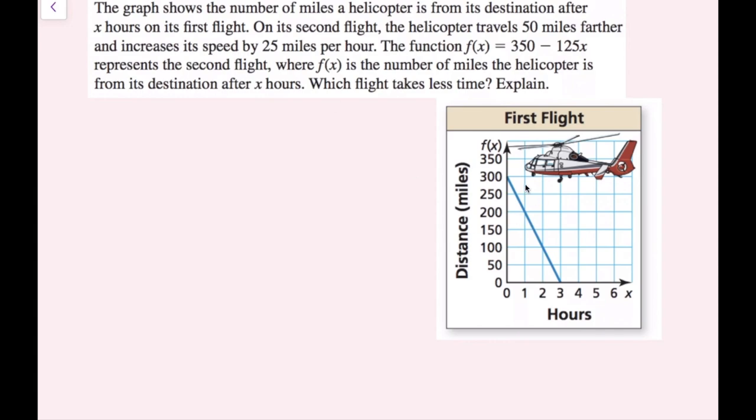So if we look at the graph down here, I can see that the first flight takes three hours because the distance away from their destination is zero when they reach three hours. So I'm going to write that down. Flight one, three hours. And then the distance that flight one takes is 300 miles.